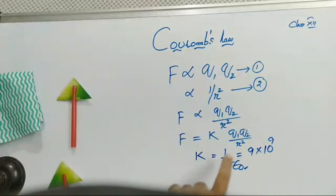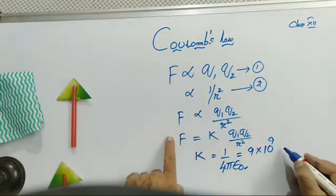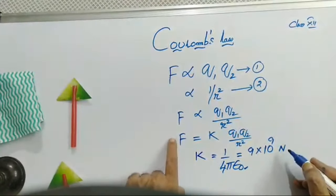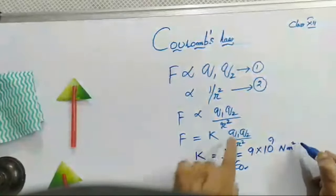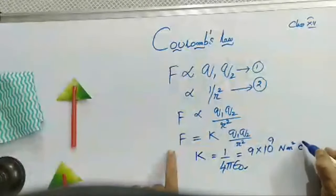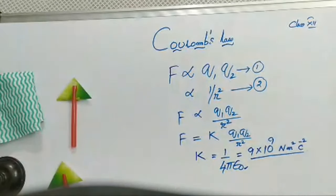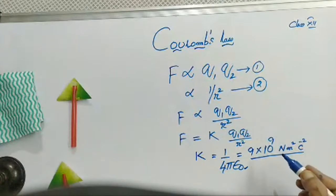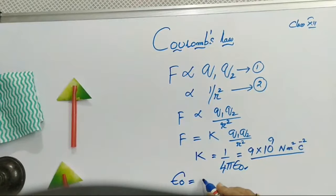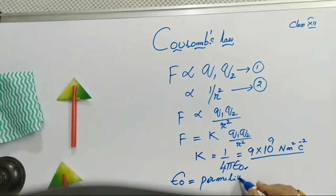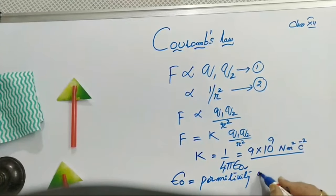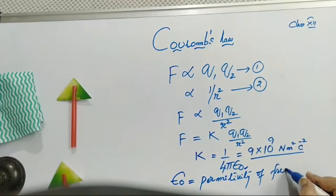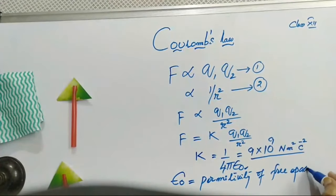If you want to write the units, R square goes to the left side. For F it is Newton, for R square it is meter square, and Coulomb and Coulomb go to the denominator — therefore Coulomb to the minus 2. The value of K is 9 into 10 to the power of 9. Comparing this with gravitational force which was 10 to the power of minus 11, the electrostatic forces are very high.